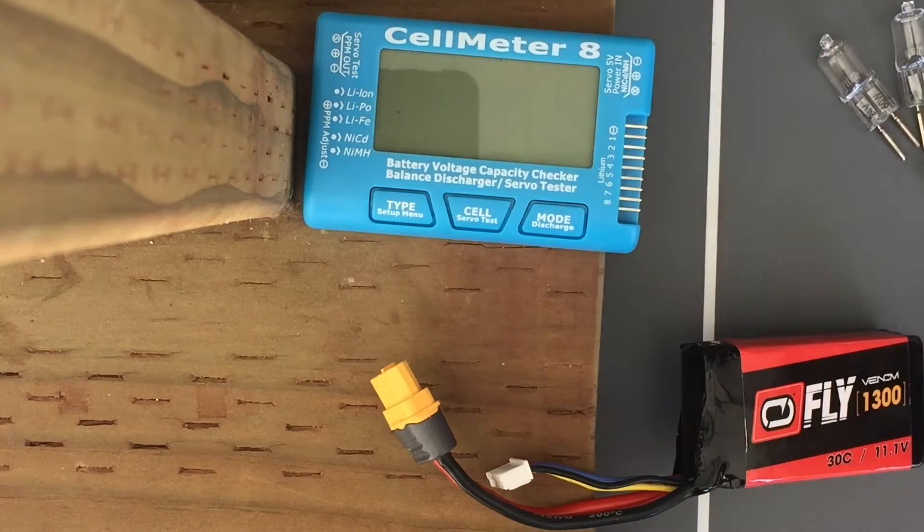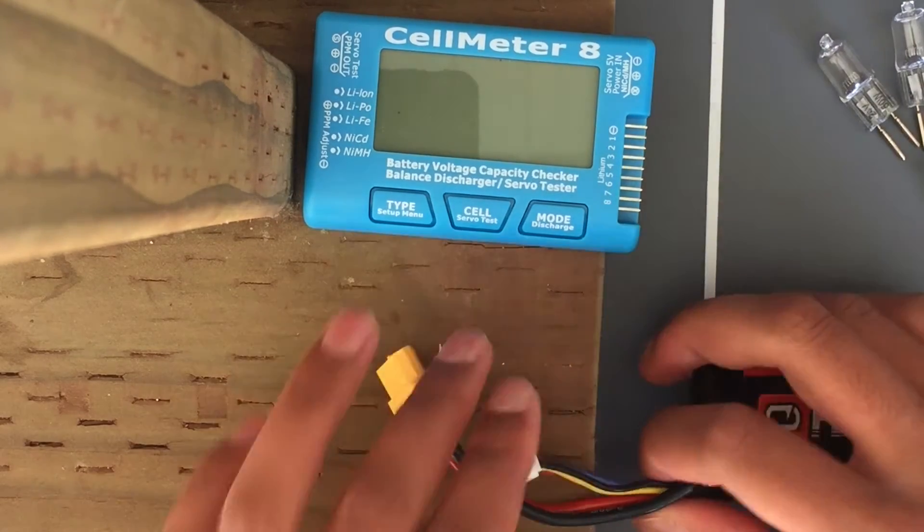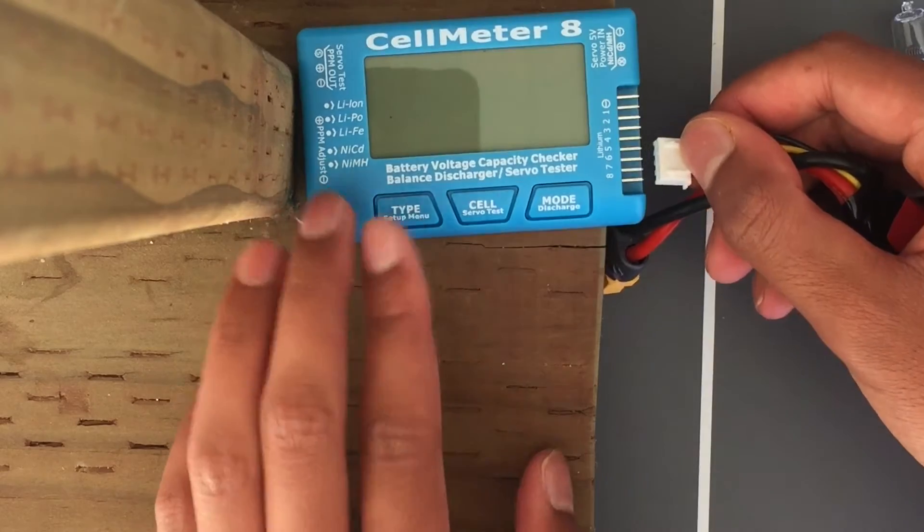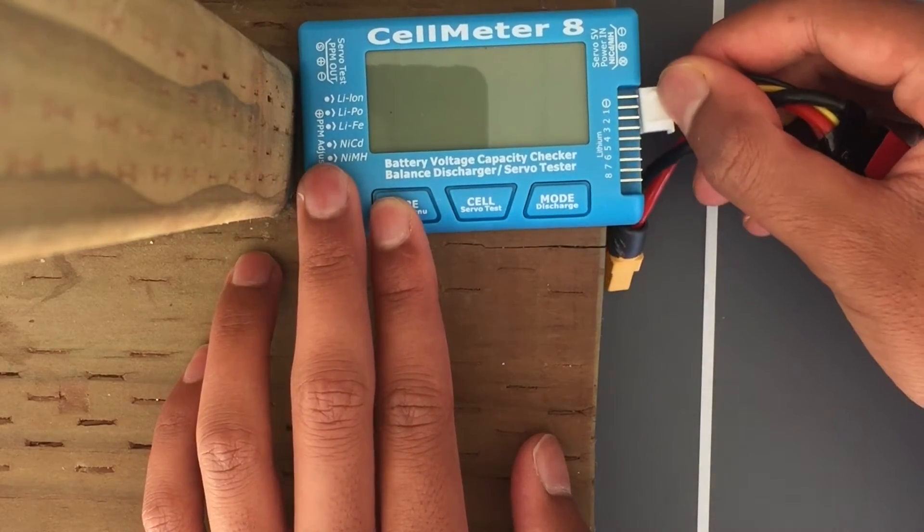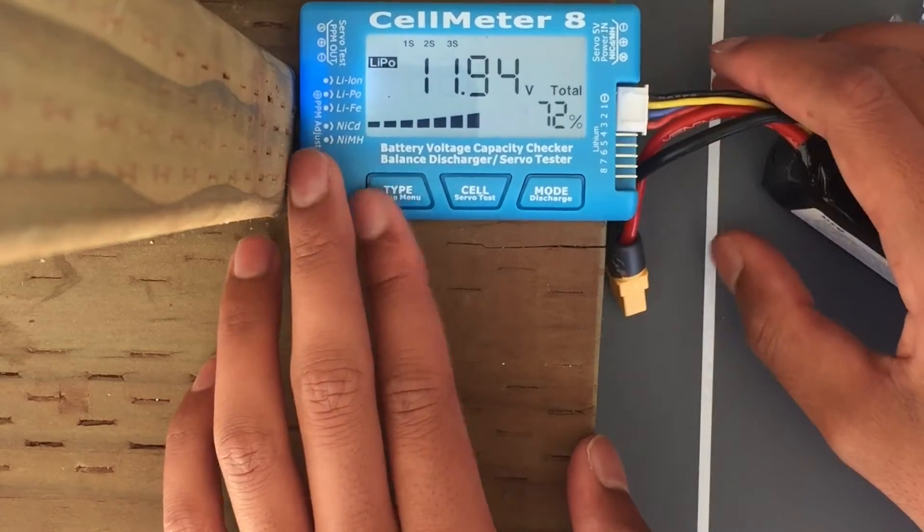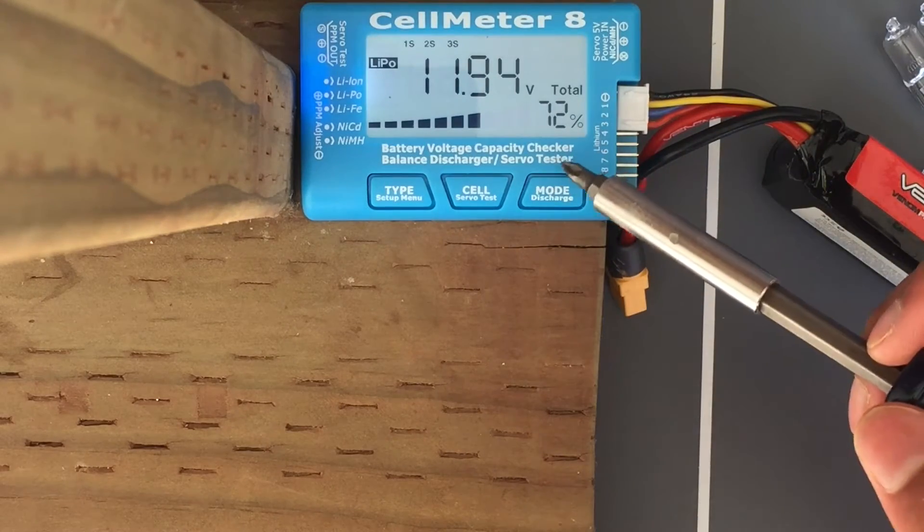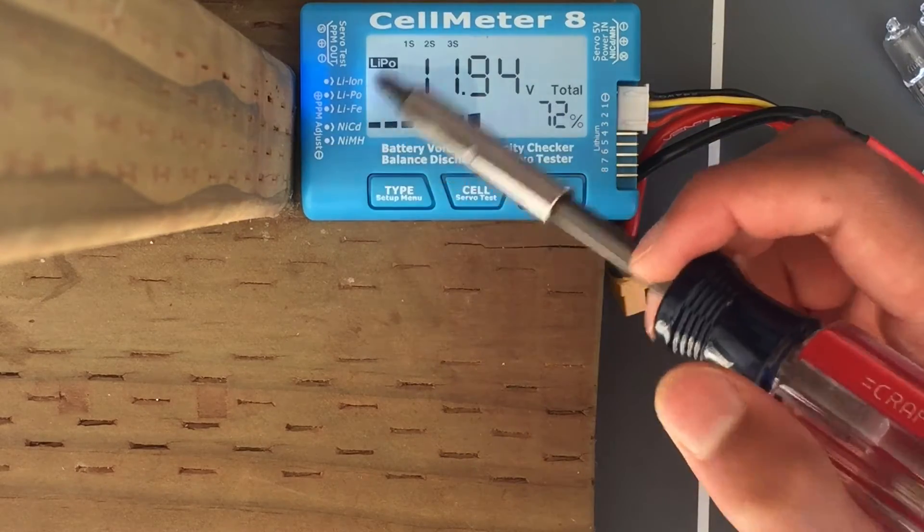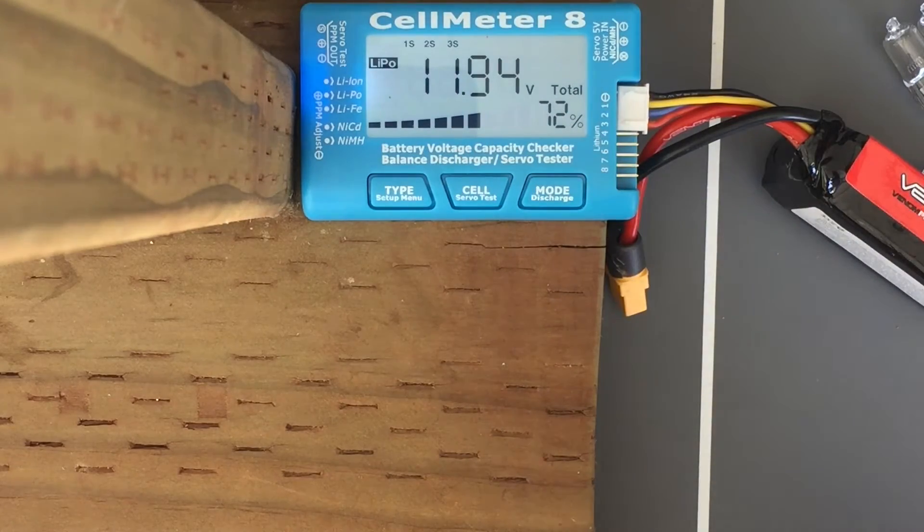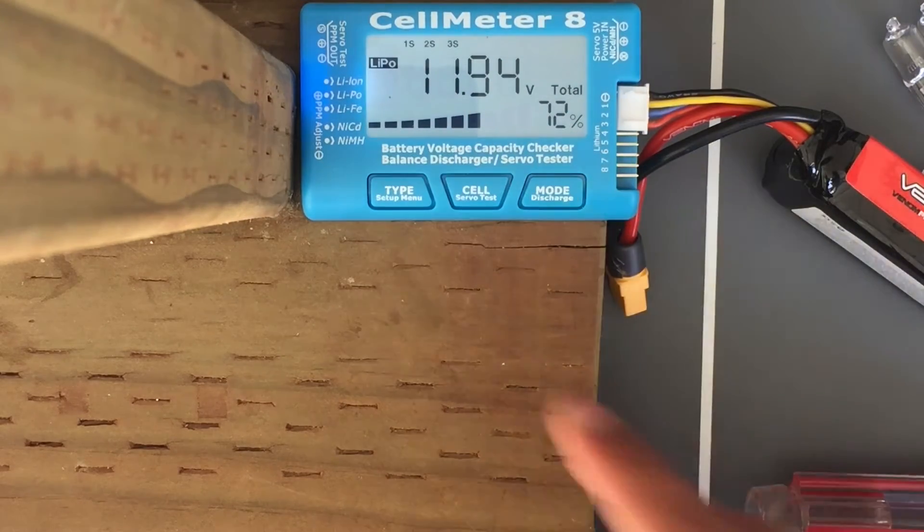To turn it on, you just plug in the balance connector into the side. It powers on right here. Immediately it shows us the total percentage, the total voltage, and the type of battery. This is a LiPo battery.